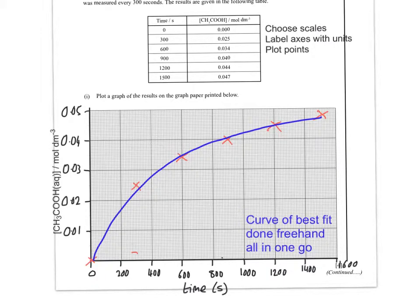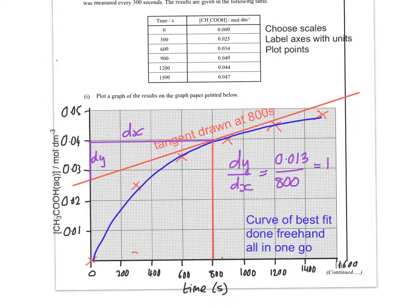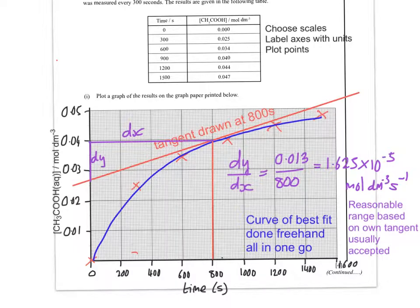Let's say you wanted to know what the rate of reaction was at 800. I draw my tangent at 800 seconds. I can form a triangle and work out what dx and dy is. dx is obviously 800, and my visual estimate is around 0.013. That's dy. That gives me 1.625 times 10 to the minus 5 moles per decimetre cubed per second to the minus 1. And a reasonable range based on your own tangent is usually accepted.